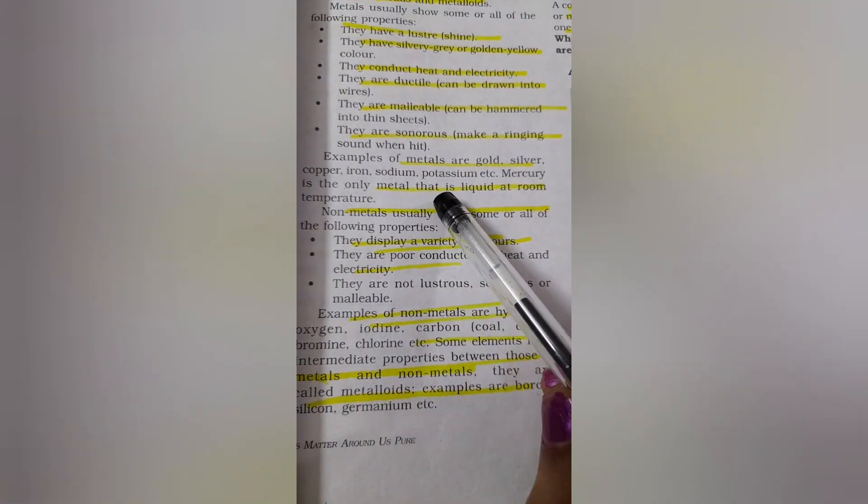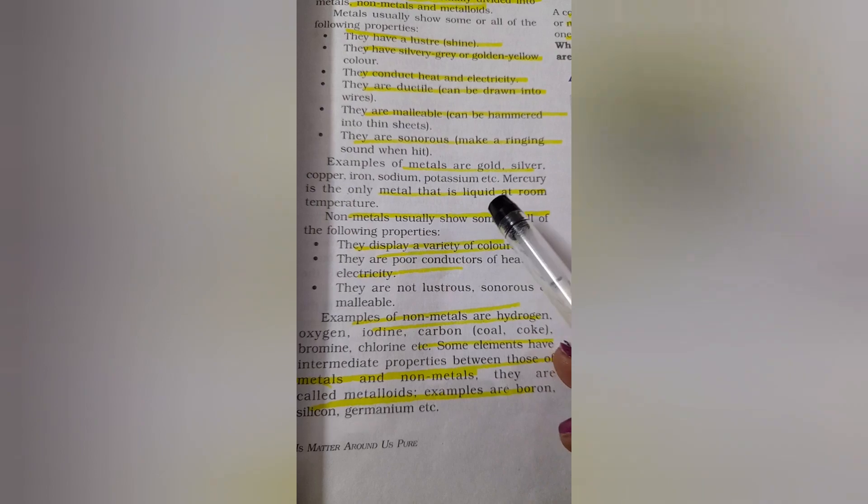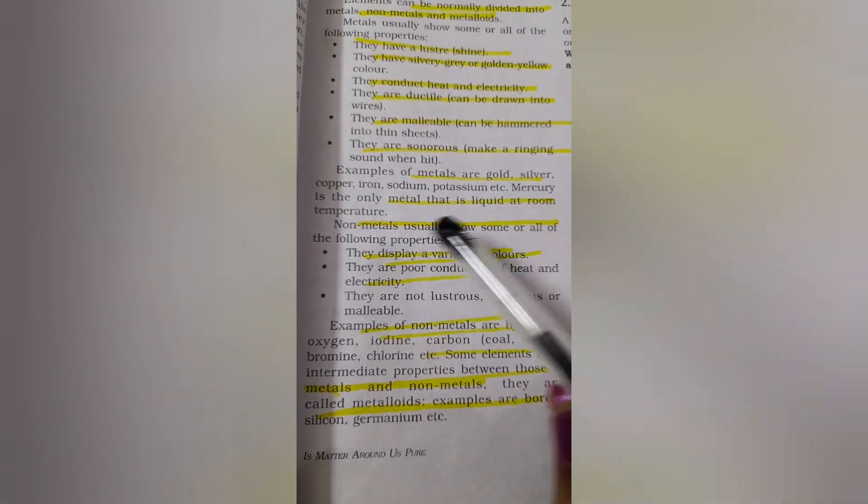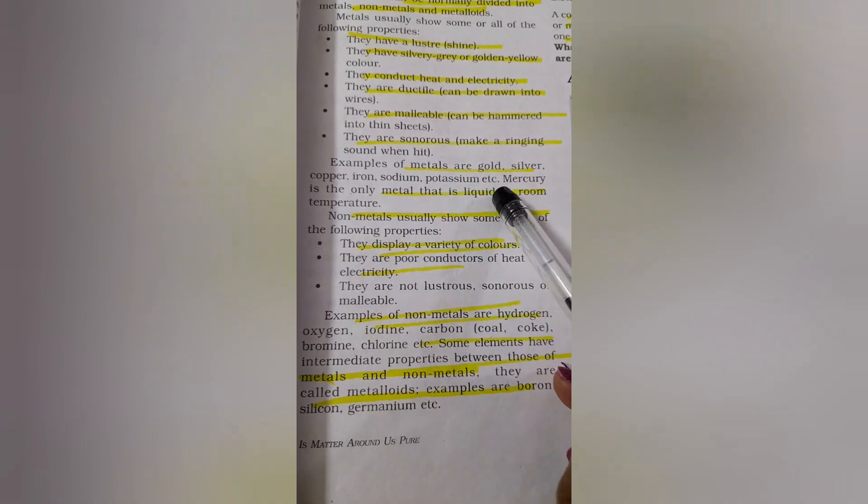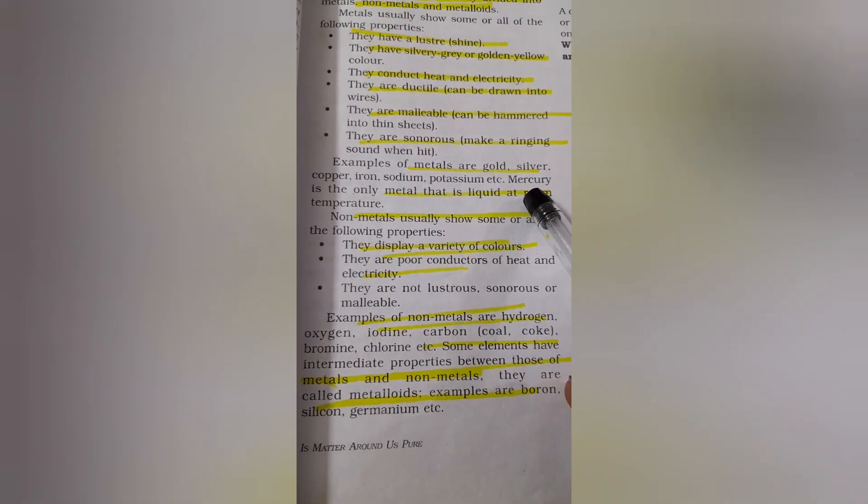We will look at some examples of metals: gold, silver, copper, iron, sodium, potassium. One exception is there: mercury is the only metal that is a liquid at room temperature. Remember that, mostly they ask such questions for your exam.